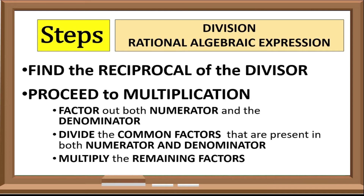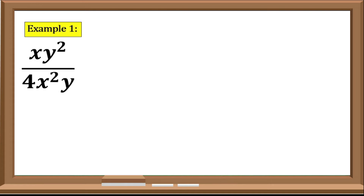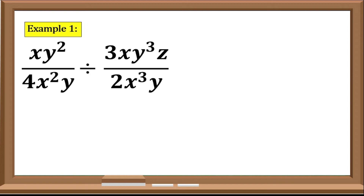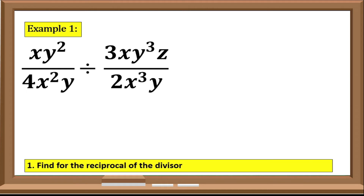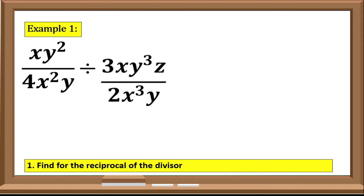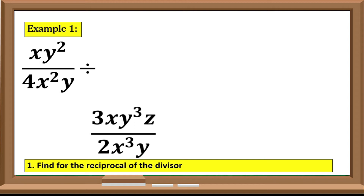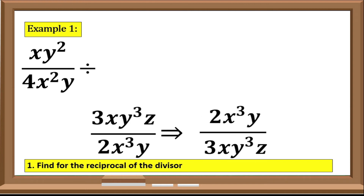Now let us take this as an example: xy² over 4x²y, divided by 3xy³z over 2x³y. First step: we need to find the reciprocal of the divisor. Our divisor is 3xy³z over 2x³y, so its reciprocal is 2x³y over 3xy³z.